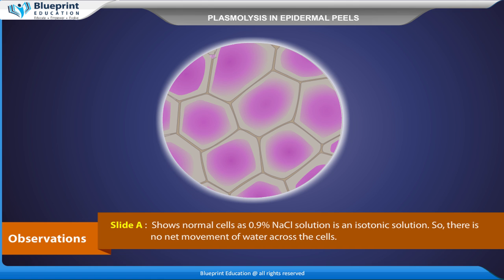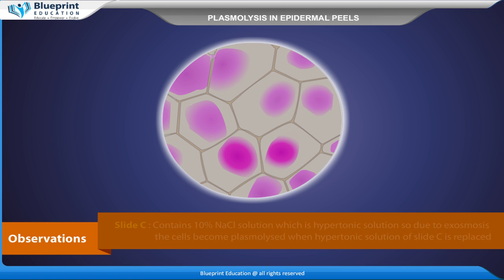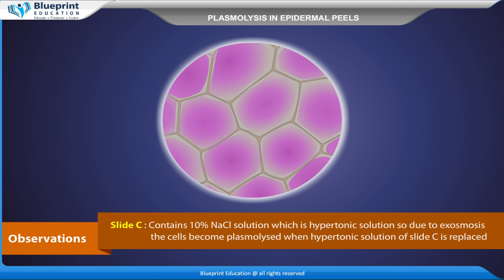Observations. Slide A shows normal cells, as 0.9% NaCl solution is an isotonic solution, so there is no net movement of water across the cells. Slide B shows turgid cells, as 0.3% NaCl solution is a hypotonic solution, so water moves into the cells due to endosmosis. Slide C contains 10% NaCl solution, which is a hypertonic solution.